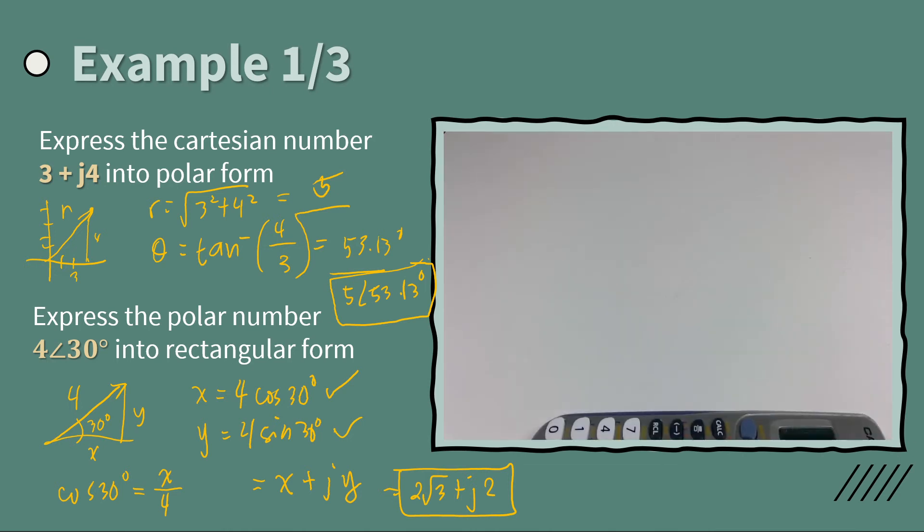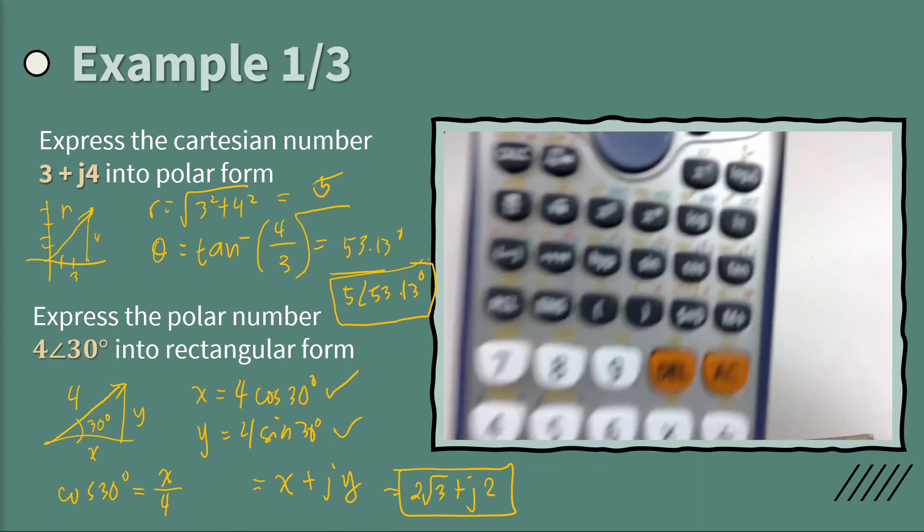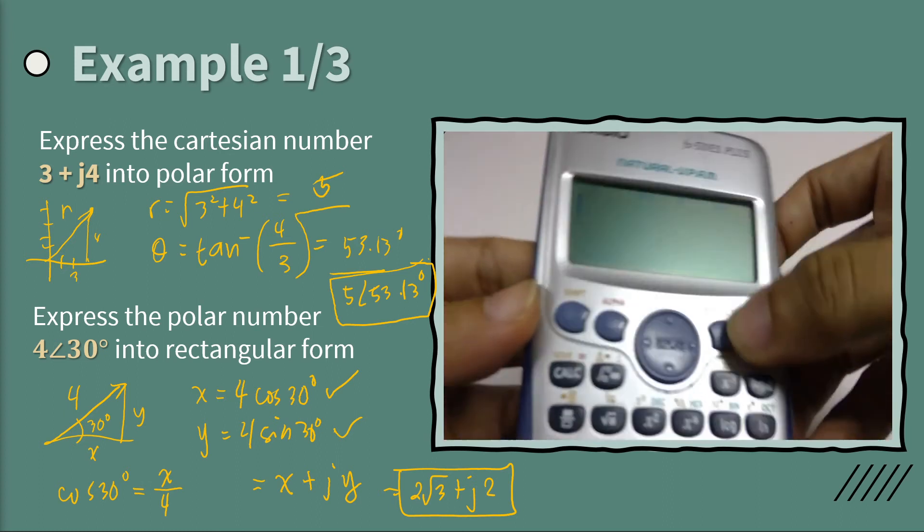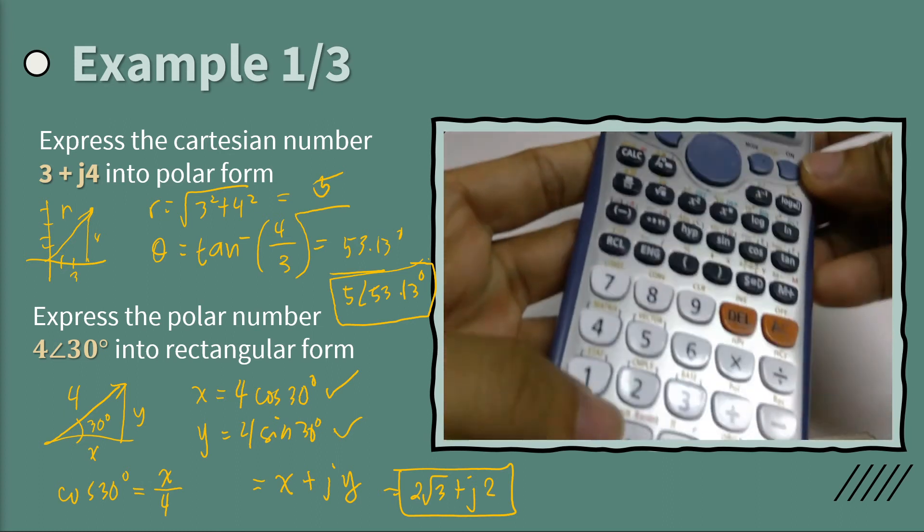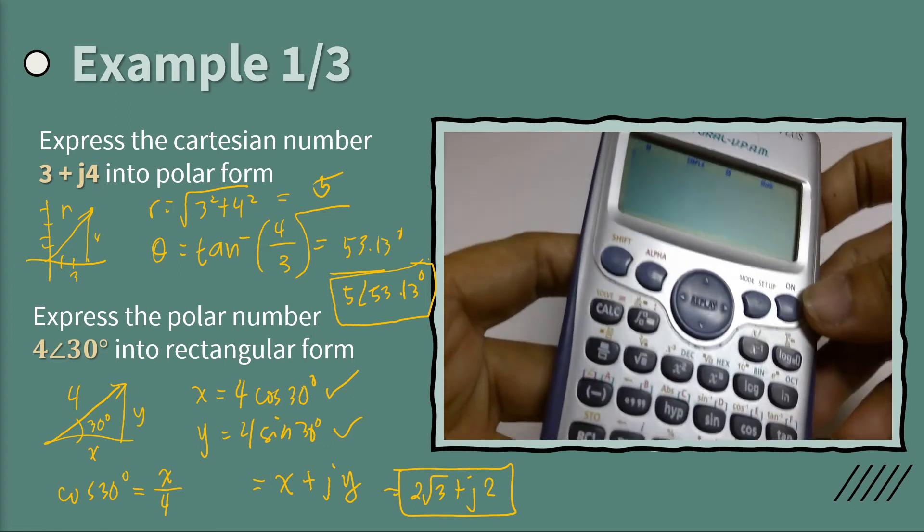So here we have our calculator. In our calculator, you just simply go to the complex mode. So mode complex. And then, so 3 plus j4.